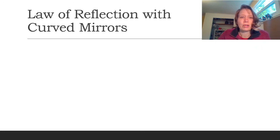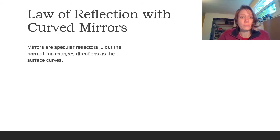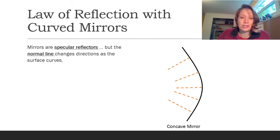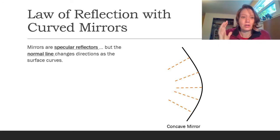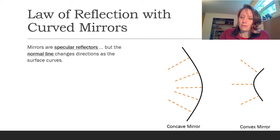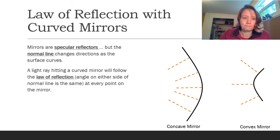The law of reflection we learned earlier applies for curved mirrors as well. Mirrors are specular reflectors, but the tricky thing is that the normal line is changing direction as the surface curves. On a concave mirror, those normal lines are shifting all along the surface. On a convex mirror, the normal lines are angled outward away from the curve. Any light rays hitting curved mirrors still follow the same law of reflection at every single point on the mirror.